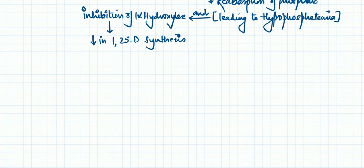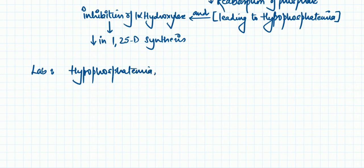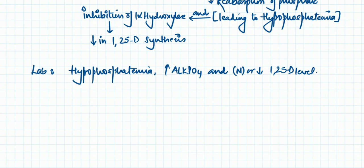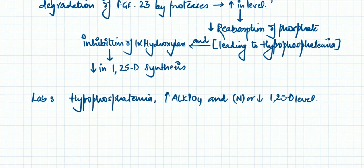The laboratory findings include hypophosphatemia as the main finding — decreased phosphate — along with increased alkaline phosphatase, and normal or low 1,25 vitamin D levels. The treatment is the same as for X-linked disorders.